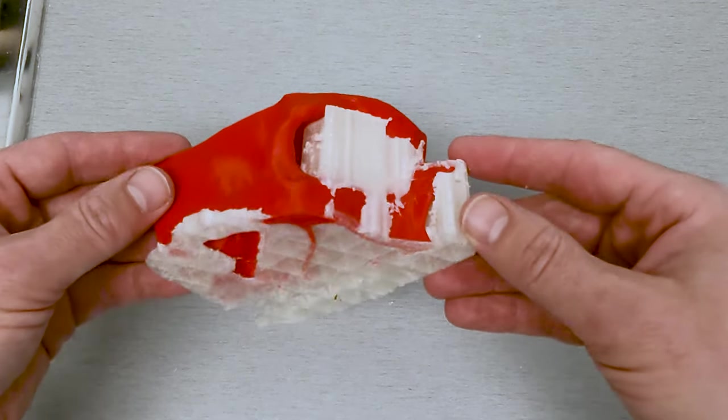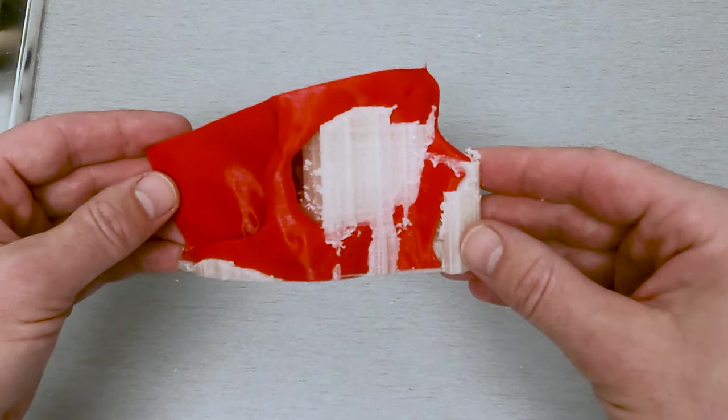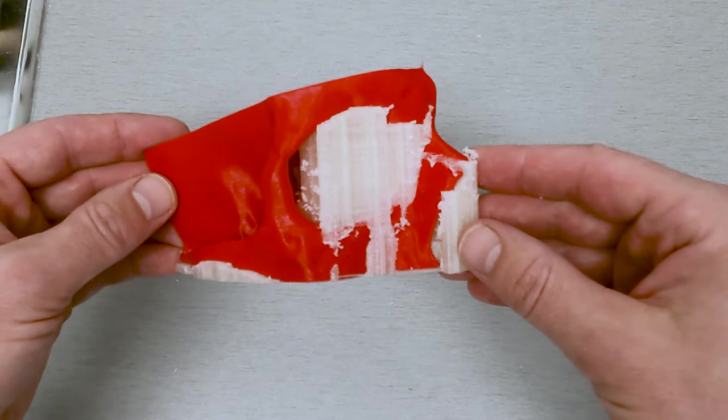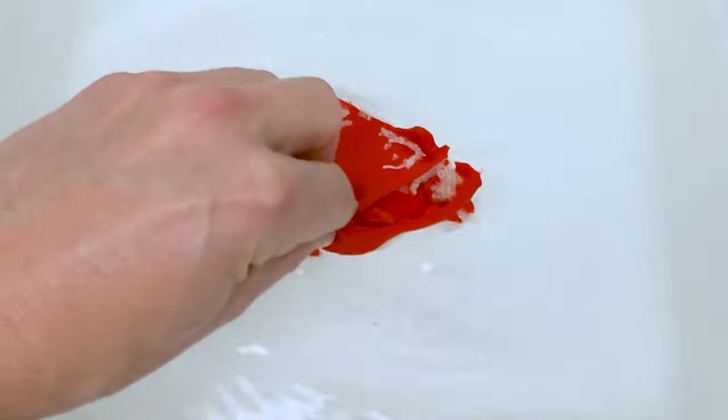In this case, we used PVA to make the supports. Since PVA is water-soluble, the model was simply submerged in water to remove the supports.